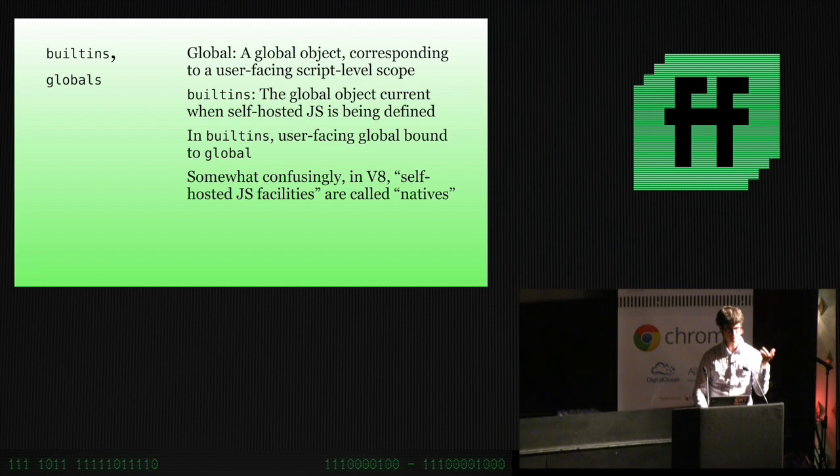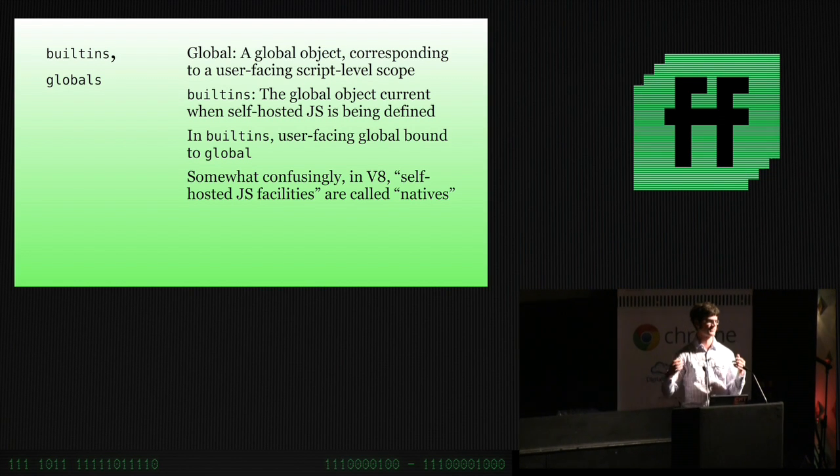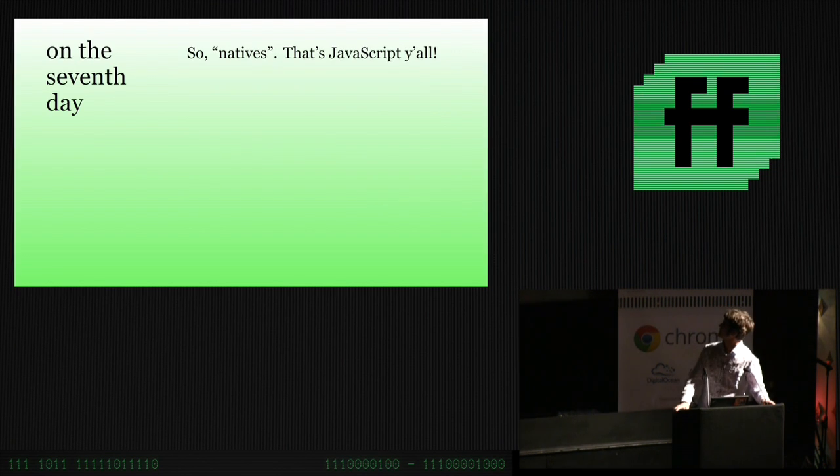We want to start to implement things in JavaScript. We need to do so in a way that we can build a program, but we don't want to expose all of our temporaries, all of our in-progress objects that are being constructed to the world. So we make a global object called the builtins and a global object called the global. The builtins has access to the global, but the global does not have access to the builtins. We do our work in the builtins and we mutate the global as we go.